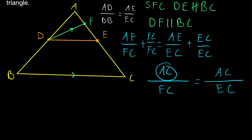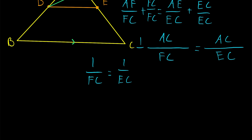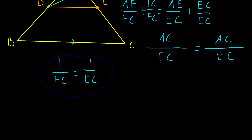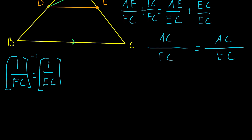Since we have a factor of AC in the numerators of both sides of the equation, we can divide both sides by AC, leaving us with 1 over FC equals 1 over EC. We are also allowed to invert both sides of this equation — this is just raising both sides to the power of negative 1 — and since they're equal, their reciprocals must be equal as well. So we have that FC equals EC.